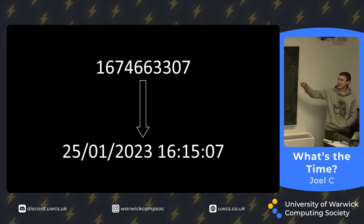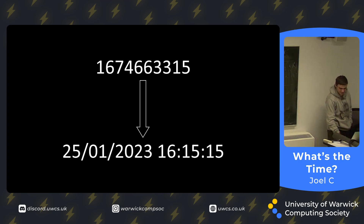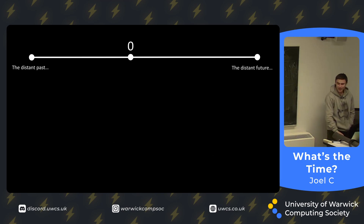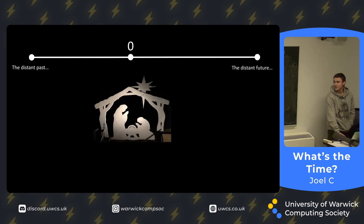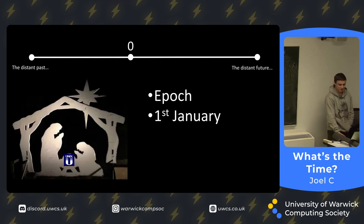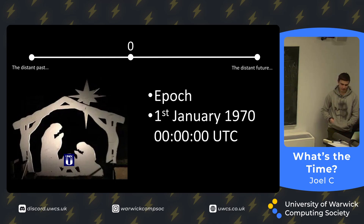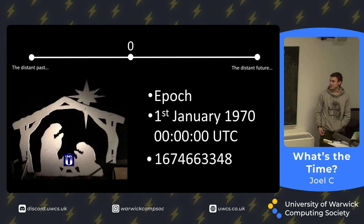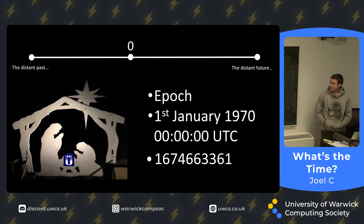So as that's incrementing, you can work out the date. But as some of the more astute among you have probably realised, as that's incrementing up, it can also increment down. Which means on our timeline, we have at some point a zero spot, and that zero spot corresponds with the Unix Epoch — the 1st of January 1970 at midnight Universal Coordinated Time. That number represents the seconds elapsed since then; right now it's been 1,674,663,364 seconds since the 1st of January 1970.